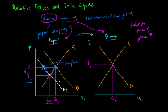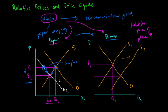So Nokia allocates more resources to the production of phones. This increases the supply of phones to S2, and therefore increases the quantity of phones produced from Q1 to Q2. And that's how relative prices and price signals work.